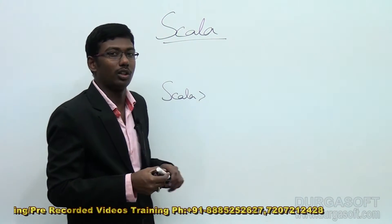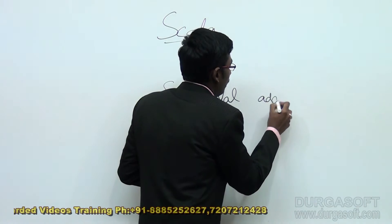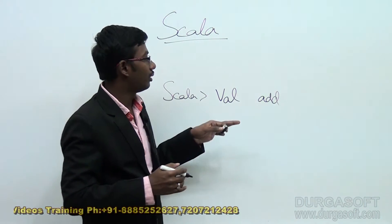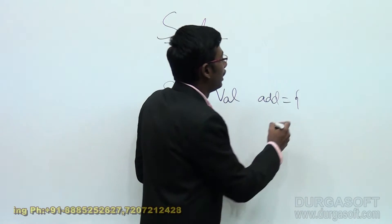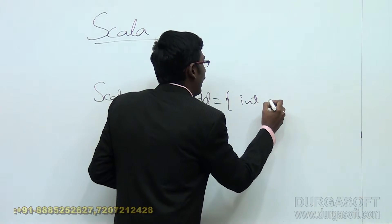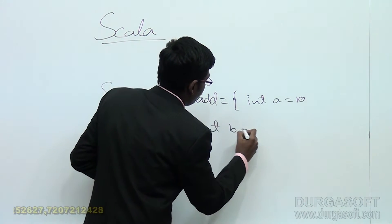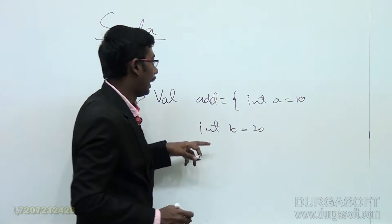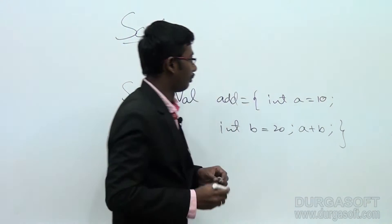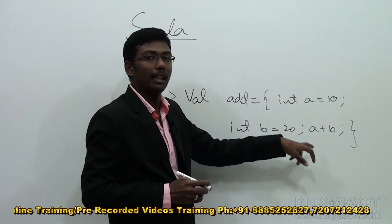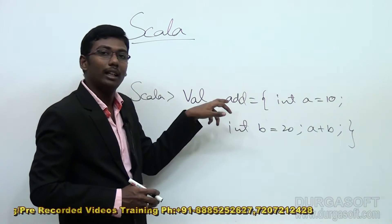Let us look at block structure to understand how it works in real time. Suppose I want to perform a simple addition operation — I need two variables, a and b. To perform it in block mode, I open the block and declare: a equals 10, b equals 20, and then give the expression a plus b. The expression result will automatically be assigned to the address value.